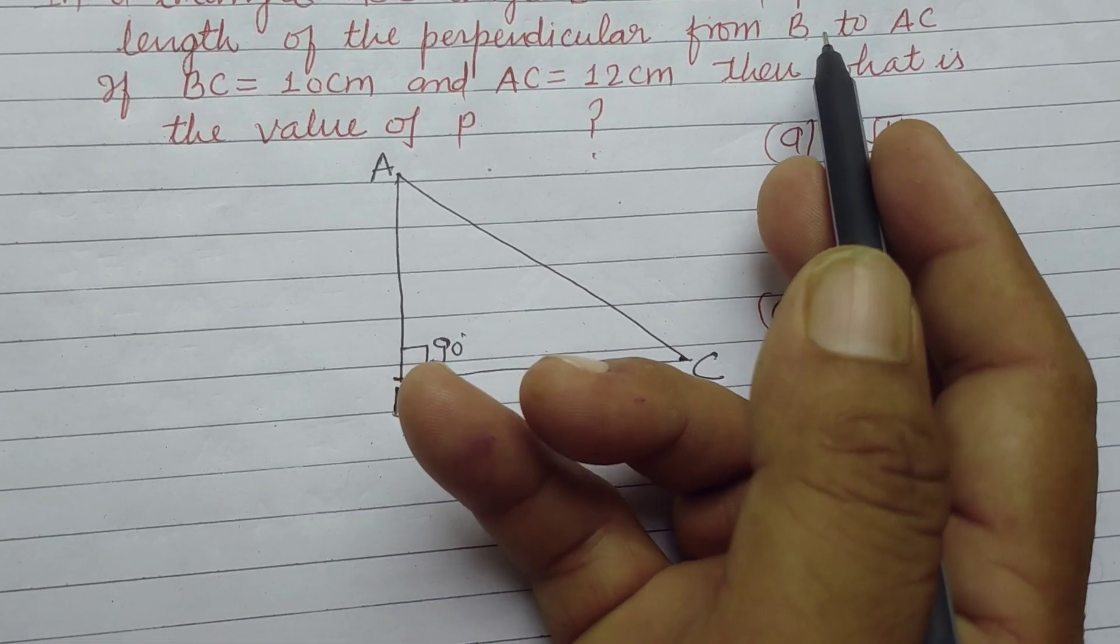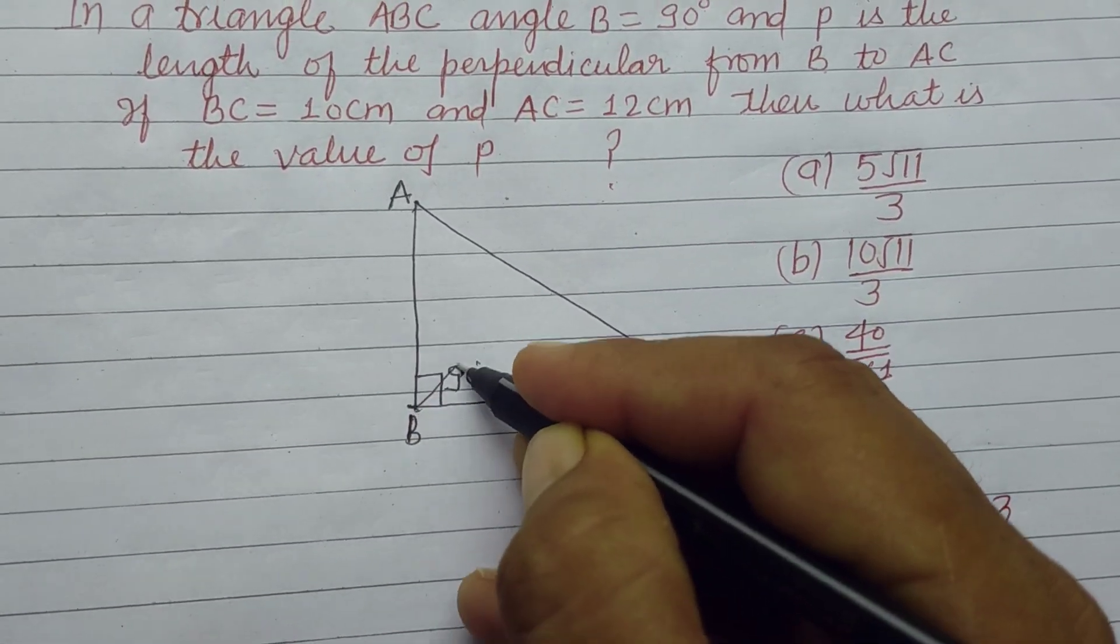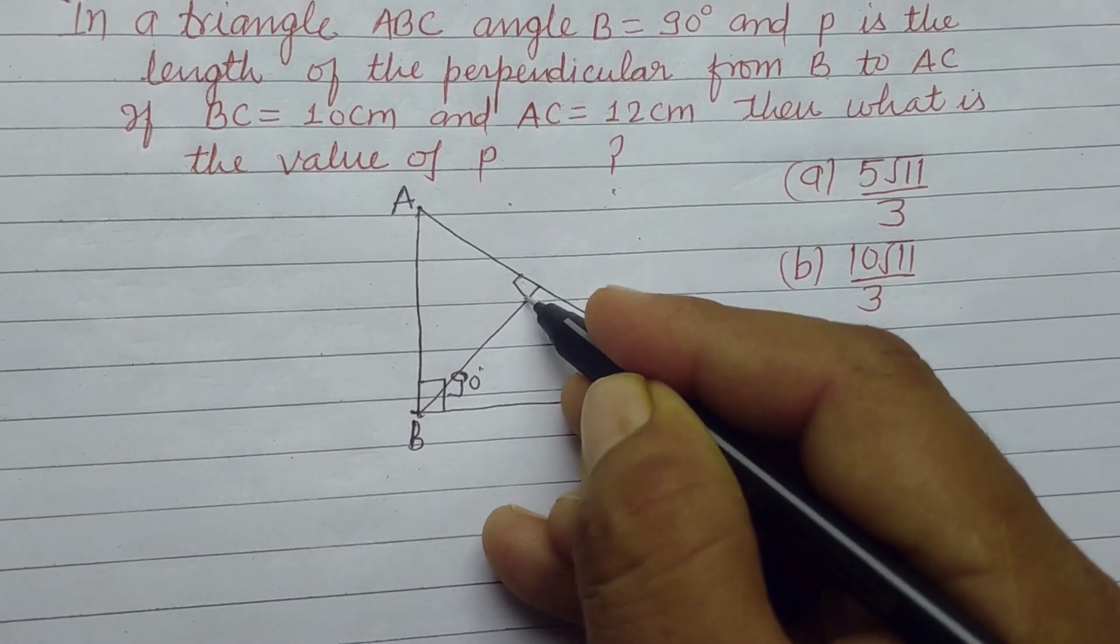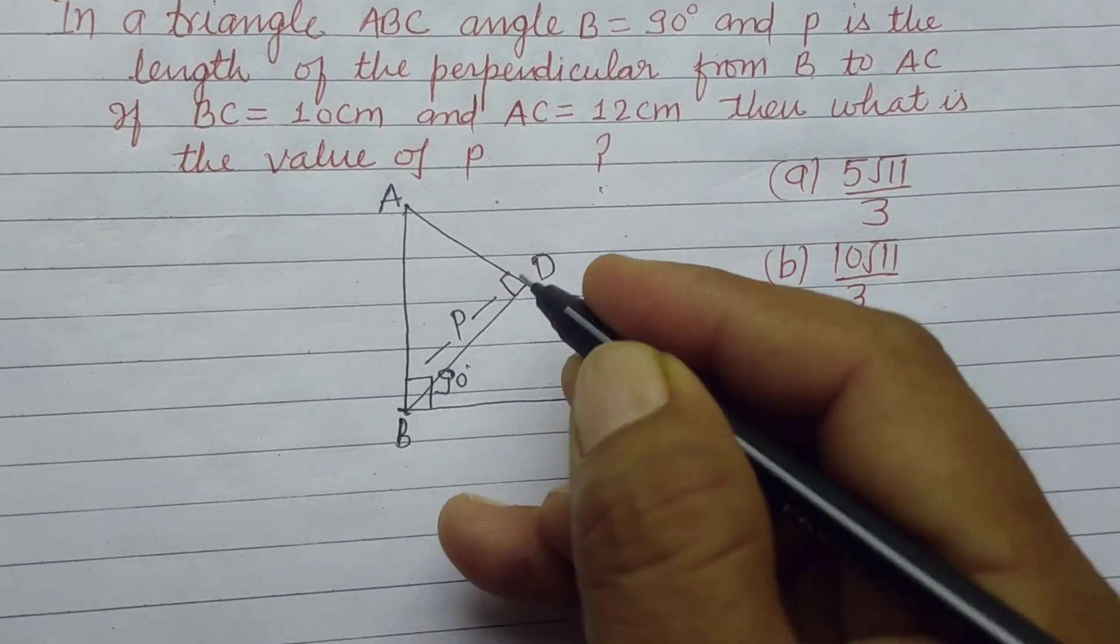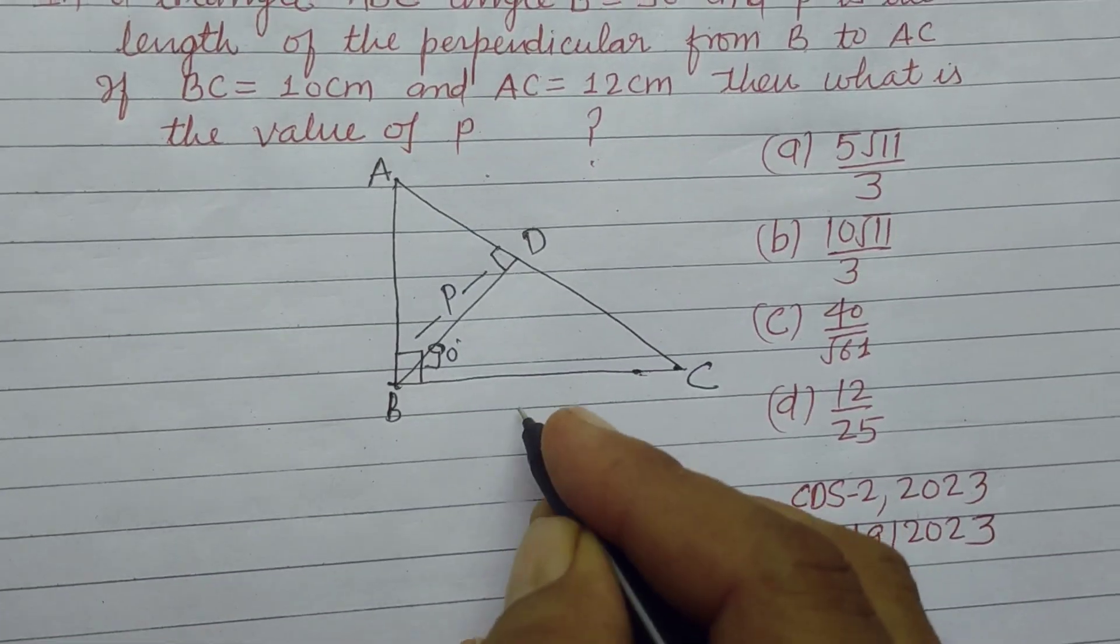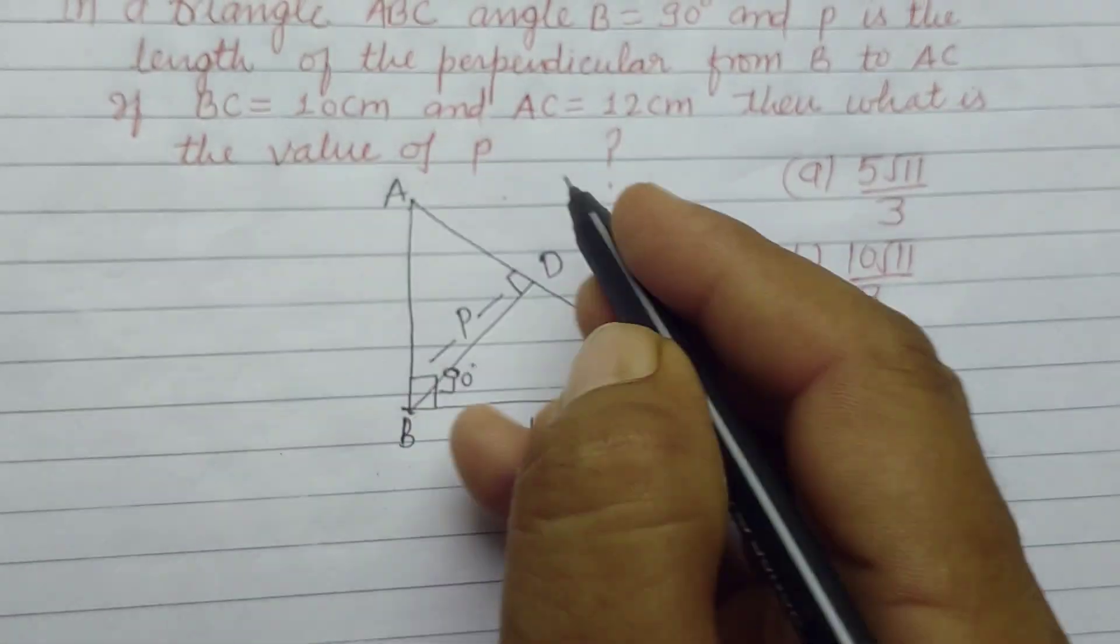The length of perpendicular from B to AC, this is a perpendicular from B to AC. This is D, its length is given P. BC is 10 and AC is 12.